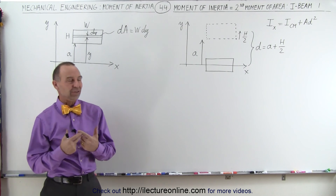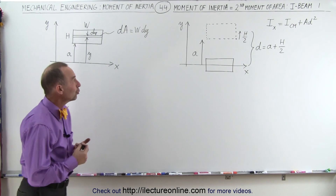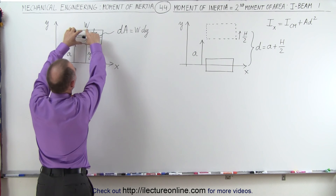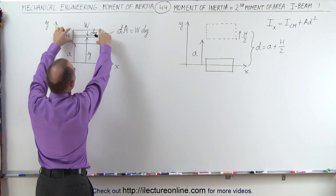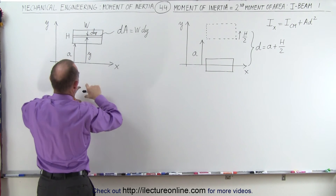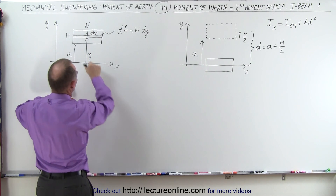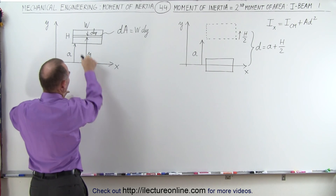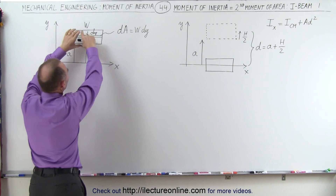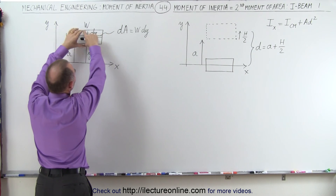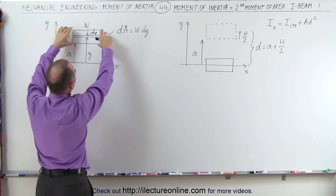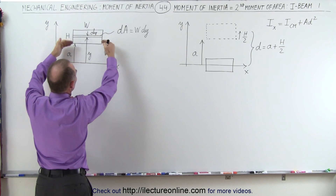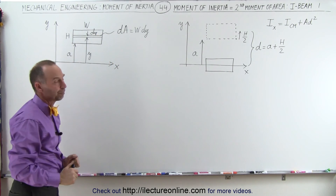We're going to do it in sections, and what we're going to do first is simply the top portion of an I-beam — assume that you have a flat portion here, a flat portion there, and then the connecting beam portion right here. We're only going to find the moment of inertia of that top portion of the I-beam relative to the x-axis.